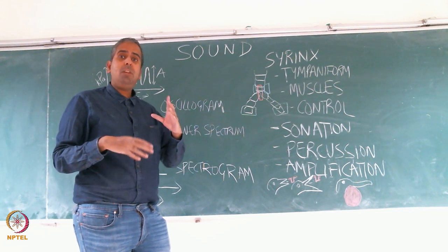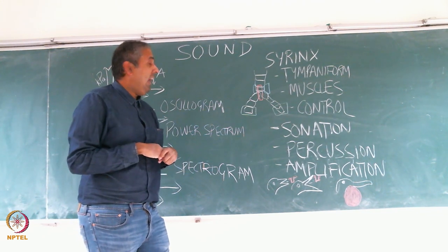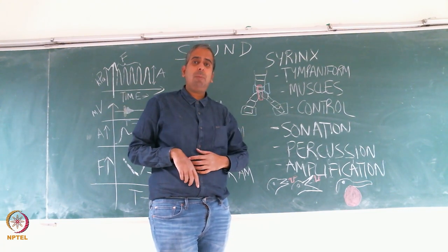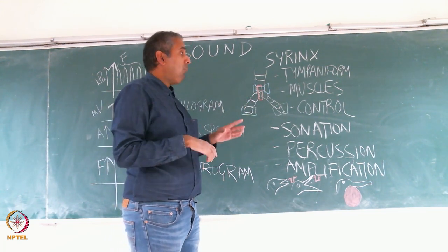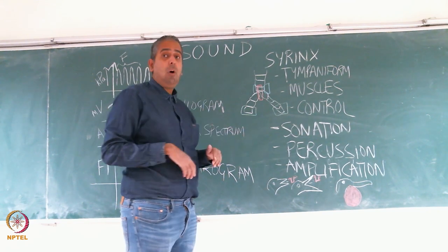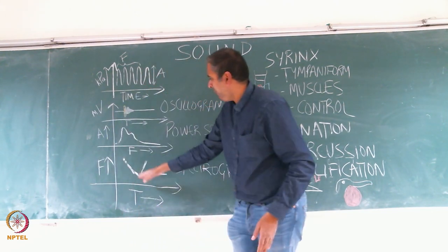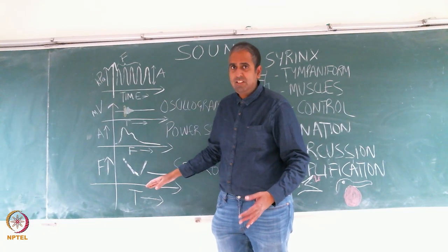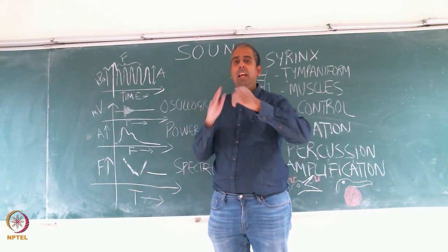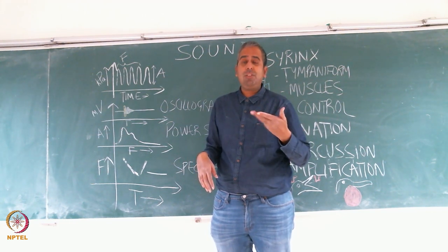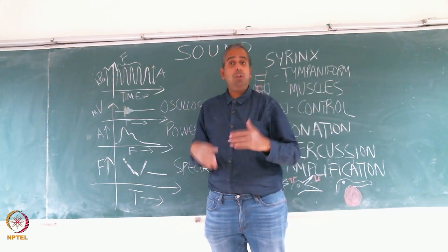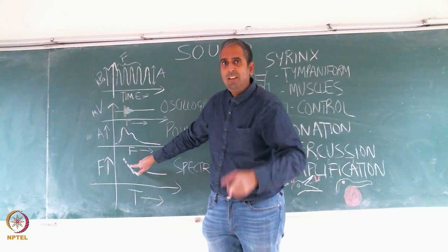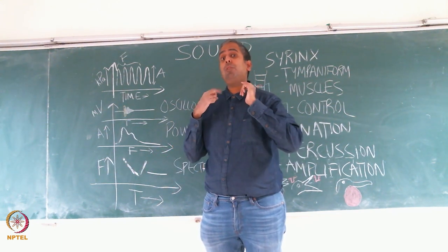Birds can also produce combinations of notes with each of the two syringes, and that's how you sometimes get two notes that overlap. Most bird sounds, and indeed most biological sounds, are harmonic. A sound will have a second band at 2x, 3x, and 4x, where x is the fundamental frequency — those are called harmonics. Harmonic sounds are an inherent property of biological sounds because they are produced by vibrating membranes. But if you see a sound overlapping at a frequency that is not at 2x, not a harmonic, it was probably produced by the other syrinx.